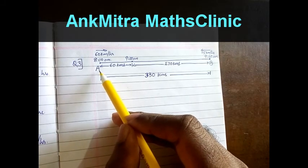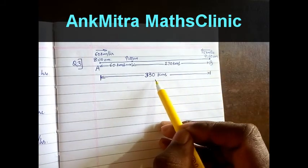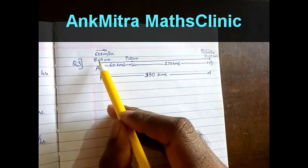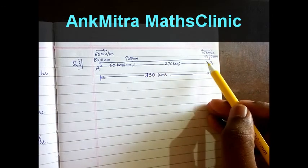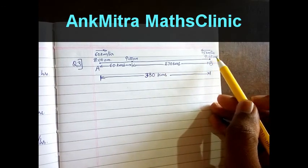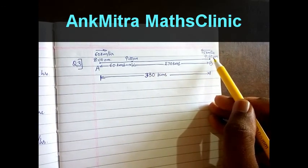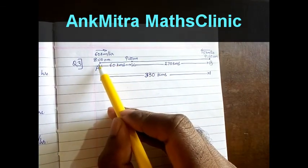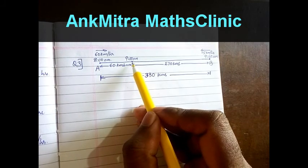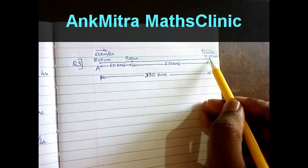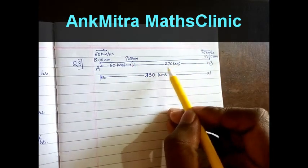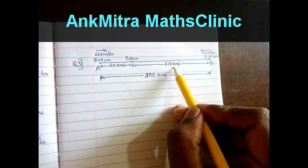The total distance between the two cities A and B is 330 km. The train starting from A leaves at 8 am, and the train starting from B leaves at 9 am — one hour after the first train. So at 9 am, the train from A will have reached a distance of 60 km from A. The distance from that point to city B will be 330 minus 60, that is 270 km.